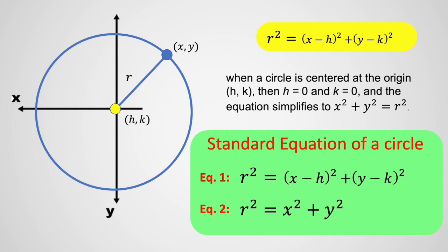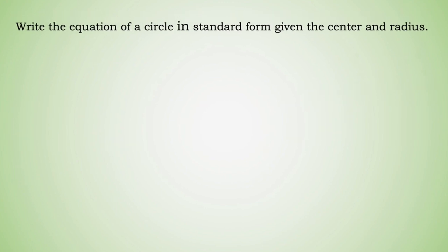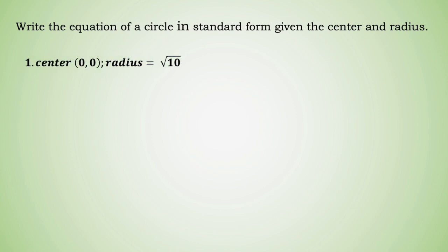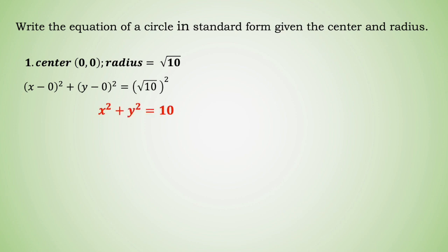Now let's apply those formulas in finding the equation of the circle in standard form. Write the equation of a circle in standard form given the center and radius. For example, if the center is at the origin and the radius equals the square root of 10, we replace h and k with 0: x minus 0 quantity squared plus y minus 0 quantity squared equals the square root of 10 squared. Simplified: x squared plus y squared equals 10.